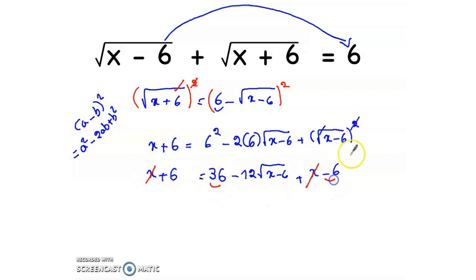36 - 6 = 30. And bringing this 6 to the other side, it becomes -6. 30 - 6 = 24 on this side.